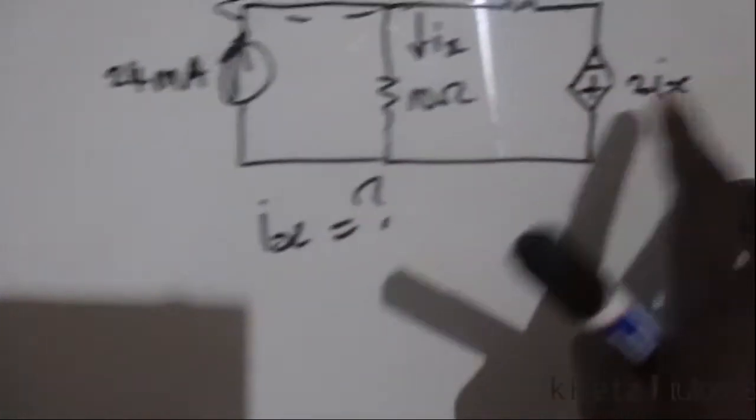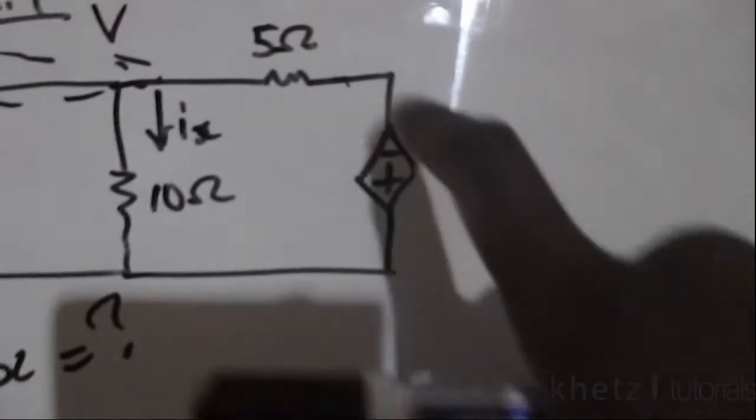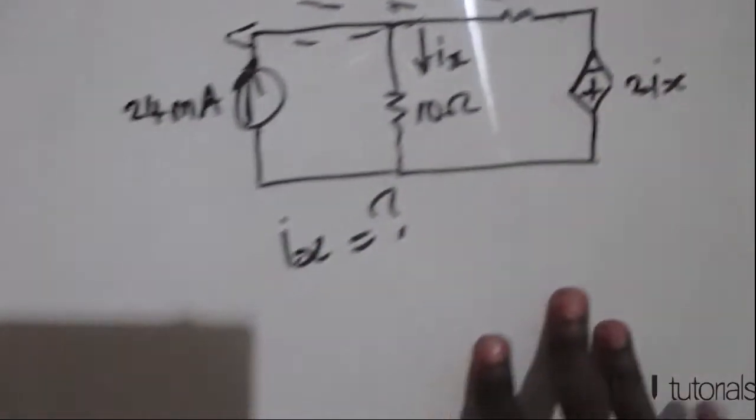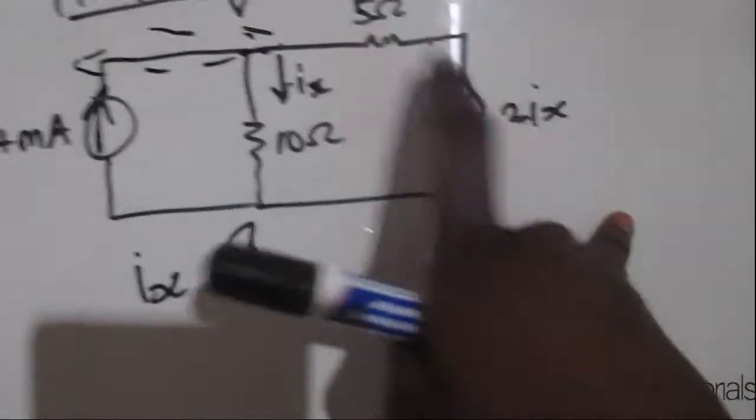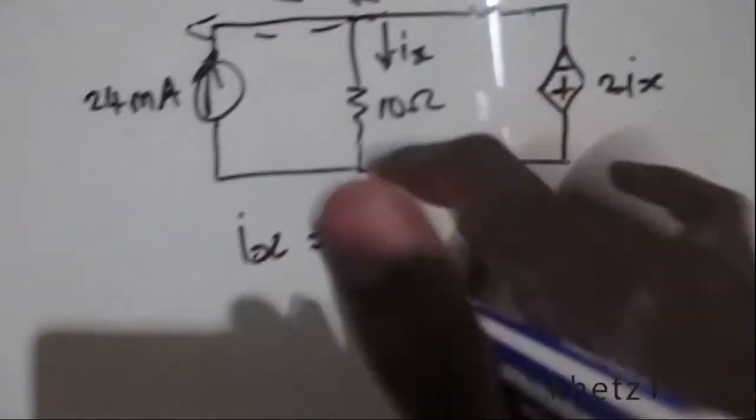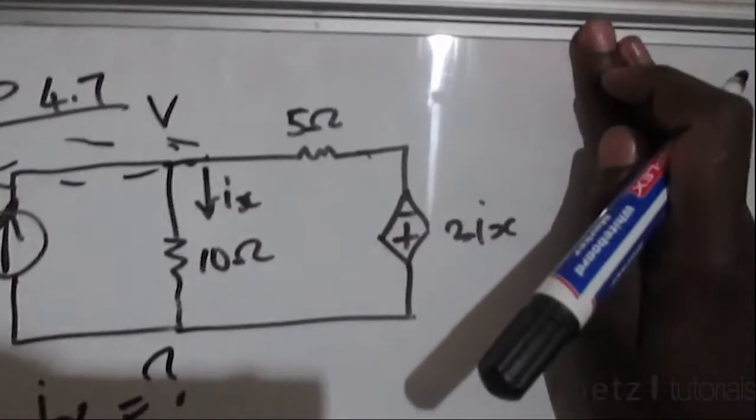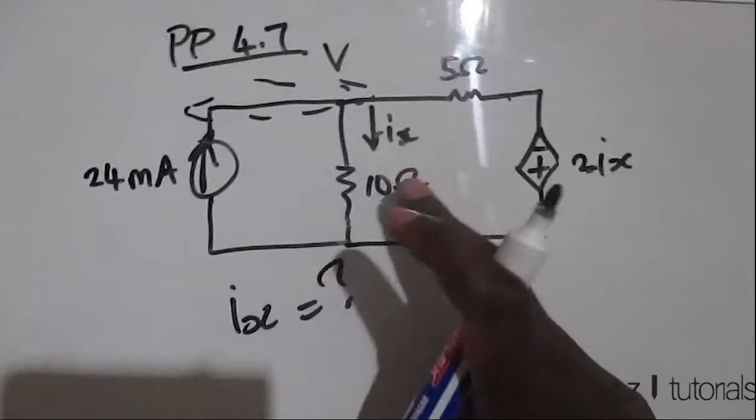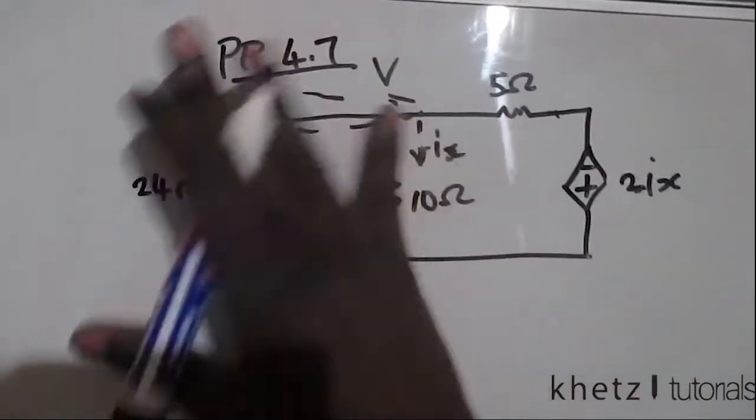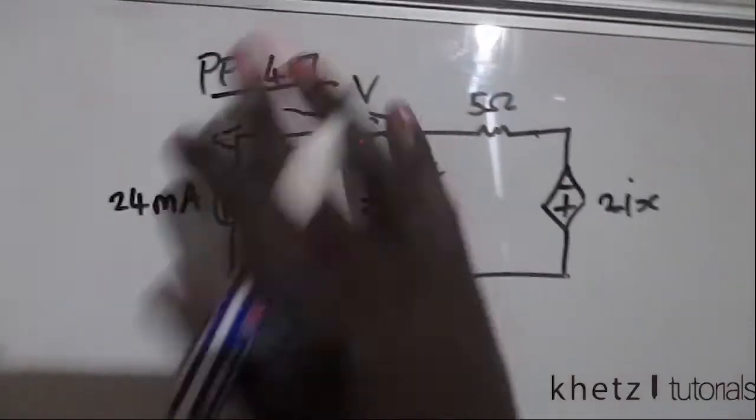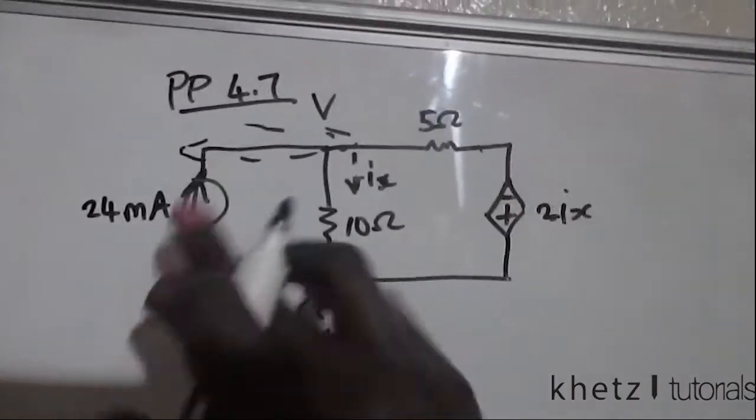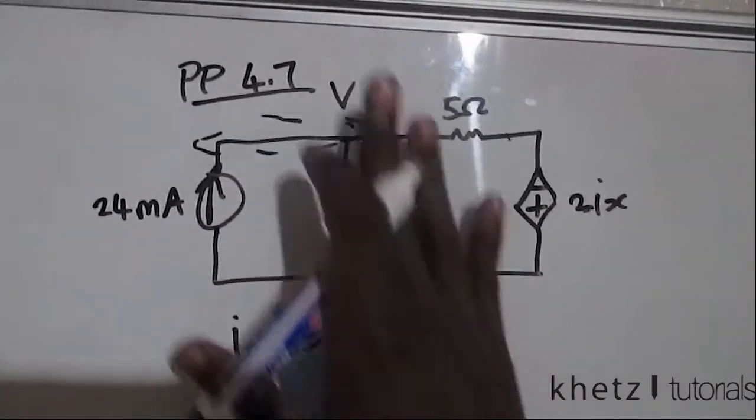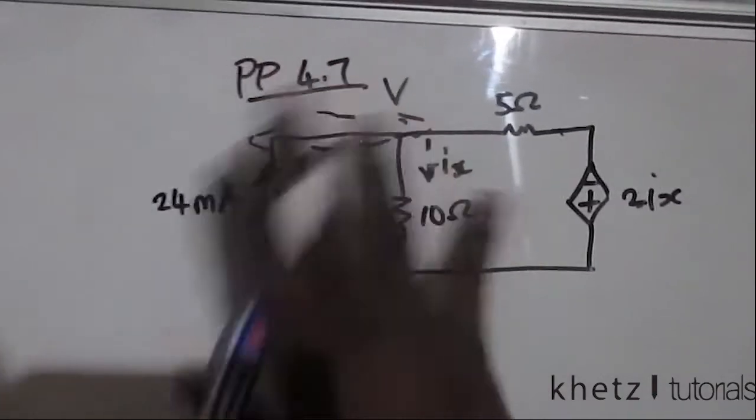So we have a voltage source which is in series with a resistor, so we're going to transform that into a current source which is in parallel with that same resistor. Since we are interested in ix, we'd rather not transform that part of the current source which is in parallel, so let's not touch this part.